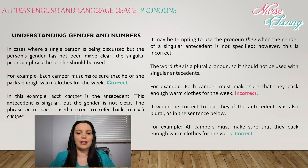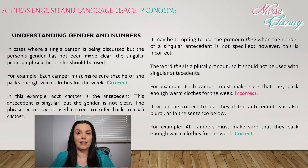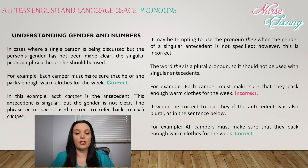In cases where a single person is being discussed but the person's gender has not been made clear, the singular pronoun phrase 'he or she' should be used. For example: Each camper must make sure that he or she packs enough warm clothes for the week. This is correct. In this example, 'each camper' is the antecedent — it is singular and the gender is not clear — so the phrase 'he or she' is used correctly to refer back to it.